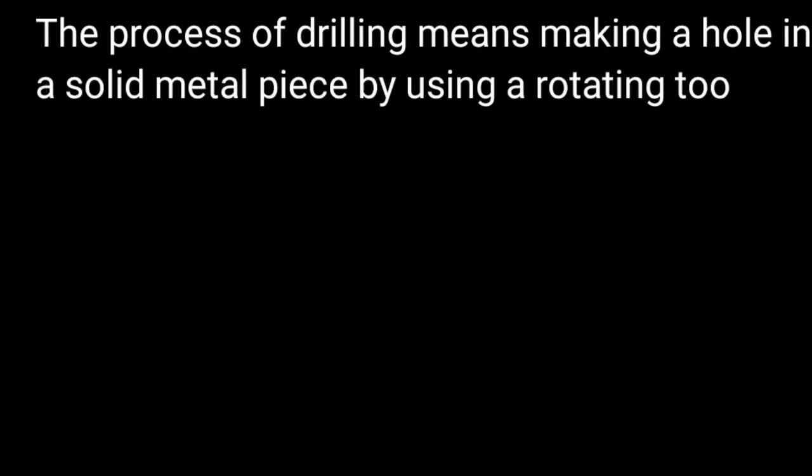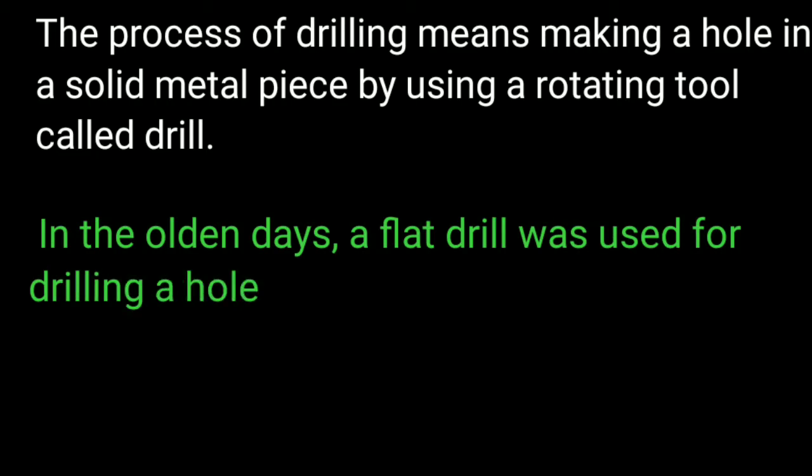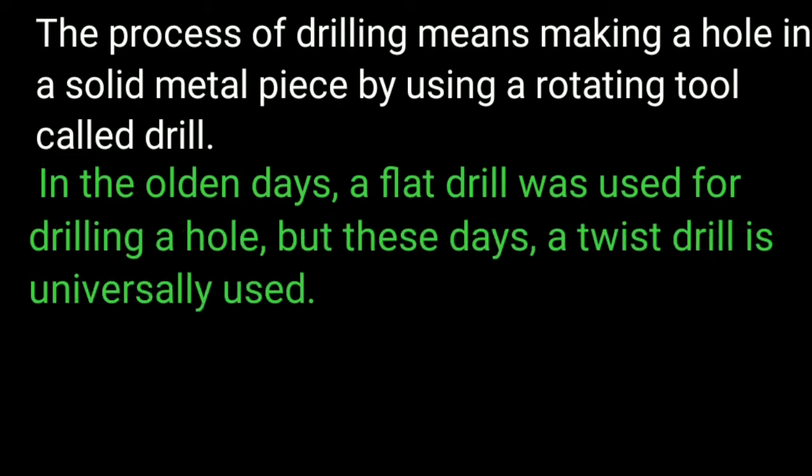Drilling machine: the process of drilling means making a hole in a solid metal piece by using a rotating tool called a drill. In the olden days a flat drill was used for drilling a hole, but these days a twist drill is universally used.